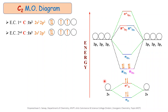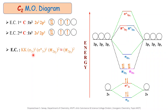The next step is writing the electronic configuration of the C2 molecular orbital in increasing order of energy. Since the 1s shell of both carbon atoms does not take part in bonding, we write 'KK' first. The full electronic configuration is: KK (σ2s)² (σ*2s)² (π2py)² (π2pz)², where π2py and π2pz are degenerate.